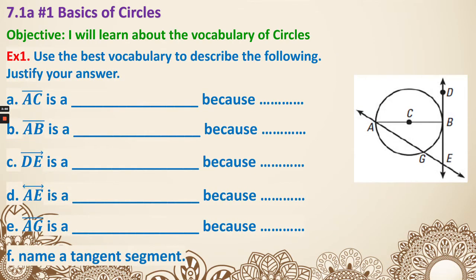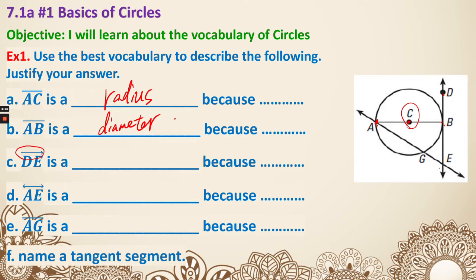First, let's start with some identification to practice our vocabulary. We see AC, which is right here - one endpoint is on the circle and C is the center. Because one endpoint is the center and the other endpoint is on the circle, that is a radius. AB right here is a diameter, because both endpoints are on the circle and it goes through the center. Next, we see this is a ray DE - it's only touching the circle at one point, so that is called a tangent ray, or more simply, a tangent.